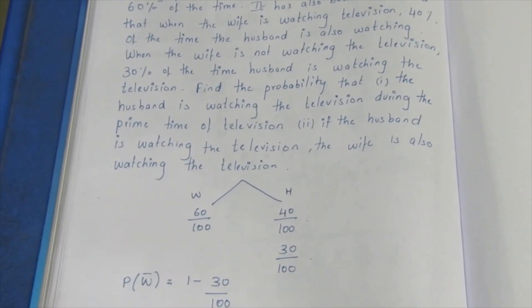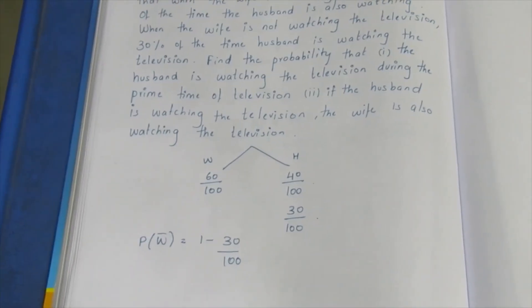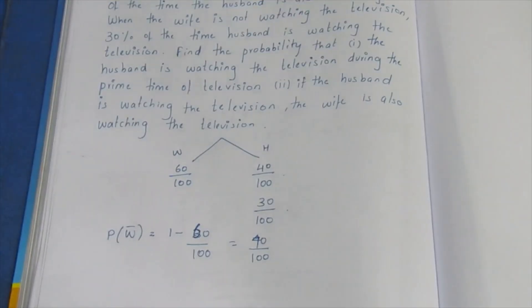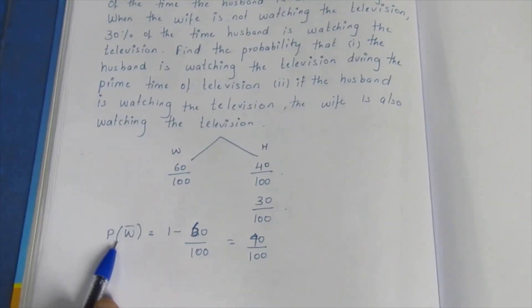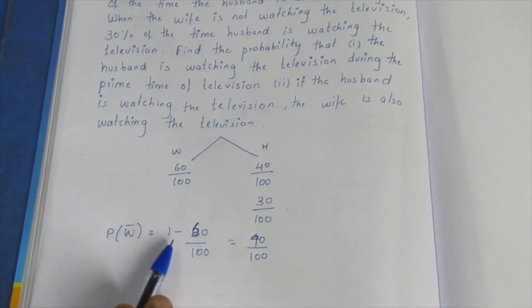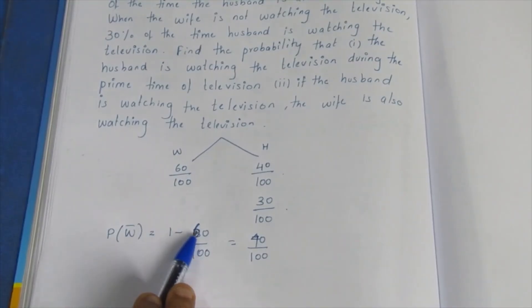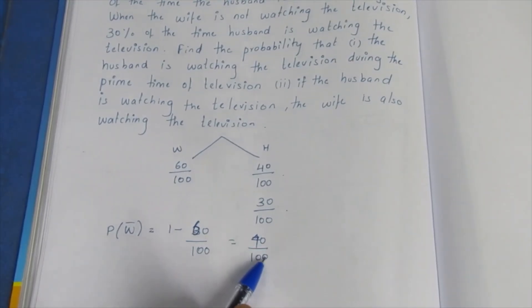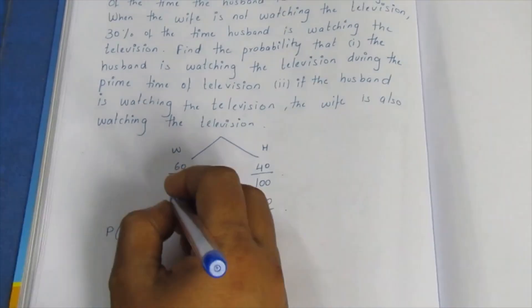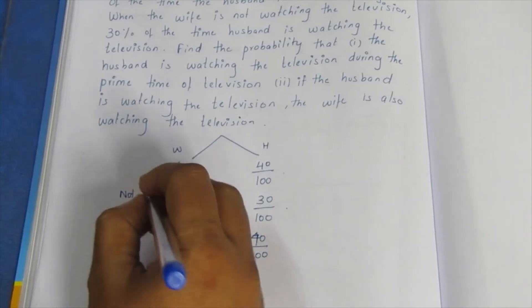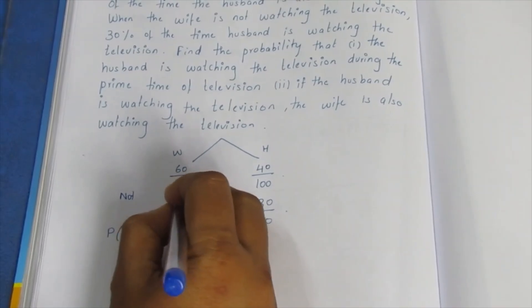Now we know the wife is not seeing the TV. The probability that wife is not seeing is 1 minus 60 by 100, which equals 40 by 100. So the probability that wife is not watching television is 40 by 100.